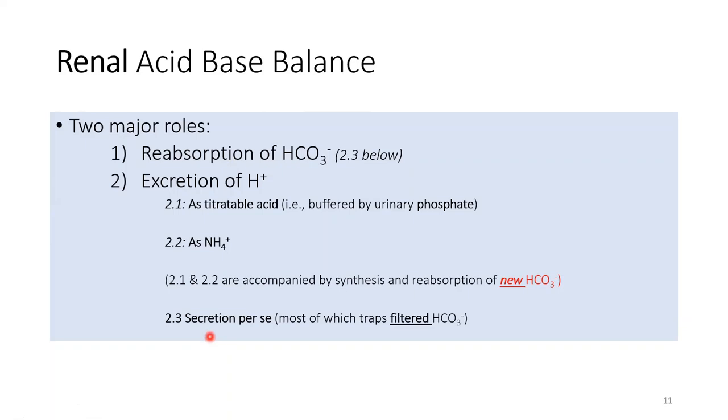Okay, so you basically secrete hydrogen inside the tubule to attract the fish - to trap the fish. Bicarbonate is the fish. The filtered bicarbonate needs to be trapped because it can easily go through and be lost. Your precious currency can be lost in urine. You don't want that, so you secrete hydrogen and take benefit from this by trapping bicarbonate.